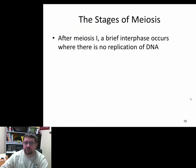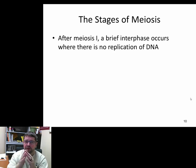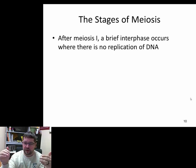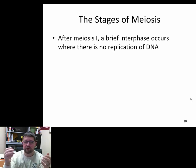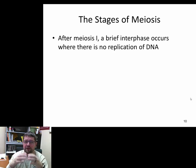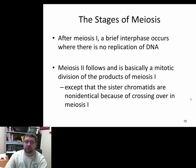After meiosis one, the cells often enter a brief interphase — going into a G1 phase for a little bit. However, it's not a true interphase because the S phase is skipped; there is no DNA replication after meiosis one. It's often just a little bit of cell growth, possibly the making of new mitochondria or ribosomes, and how long this lasts depends on the organism.